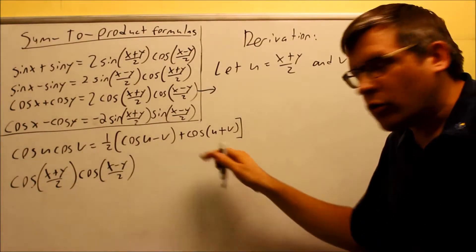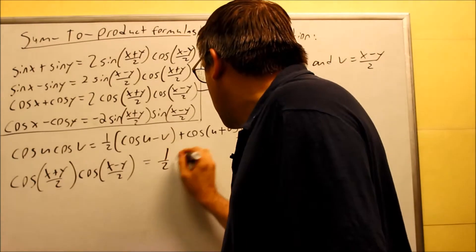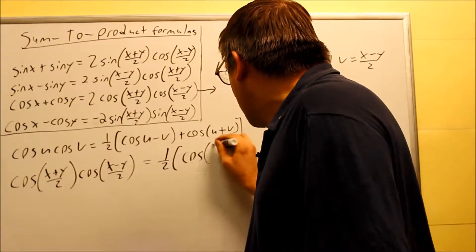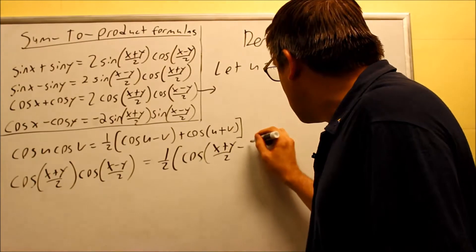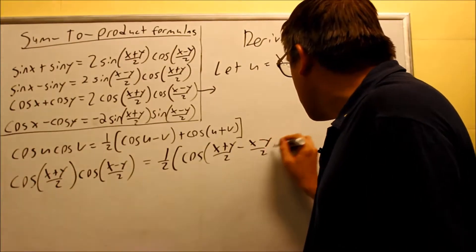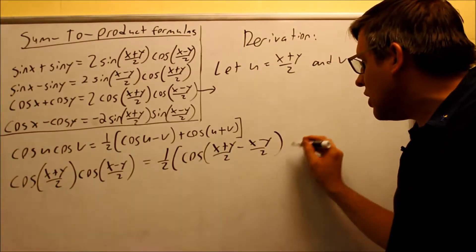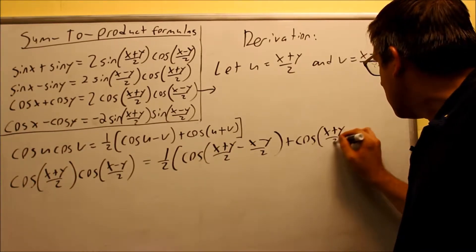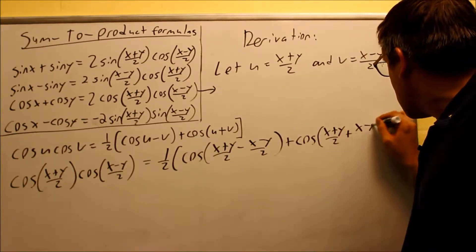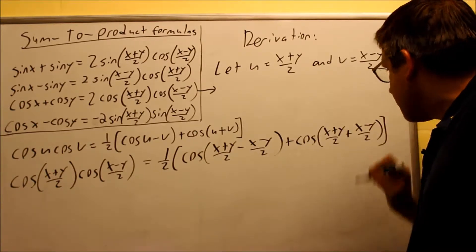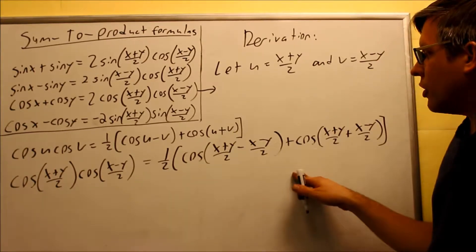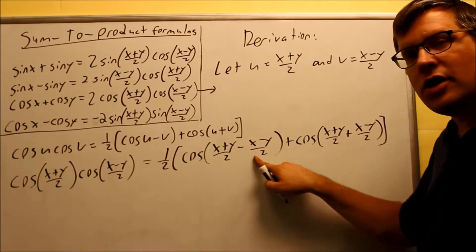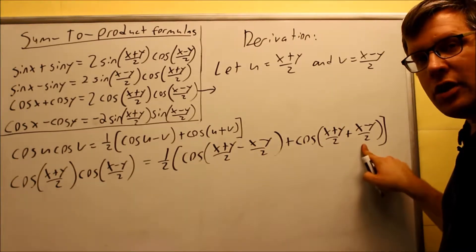I want to do the same thing now on the right-hand side. I get 1 half cosine of x plus y over 2 minus x minus y over 2, so it's subtracting that, u minus v. Then I have cosine of x plus y over 2 plus x minus y over 2.